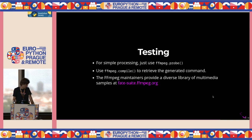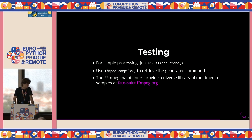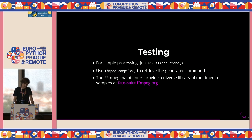If you're using FFmpeg Python, how are you supposed to test your software? For simple processing, you can use FFprobe to check if the output file is healthy and contains streams of the expected duration. You can also use FFmpeg compile to retrieve the generated commands and verify your complex conditional processing pipelines generate correct output. A very useful resource is that FFmpeg maintainers provide a diverse library of multimedia samples at fate.ffmpeg.org — you can get codecs you don't normally encounter, very useful if you want to develop a solution that accepts everything as input.